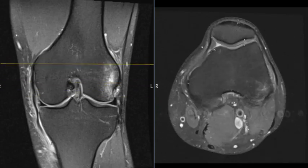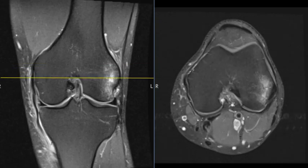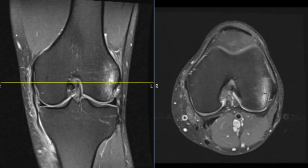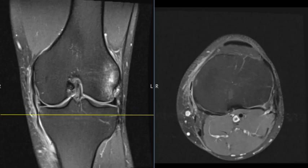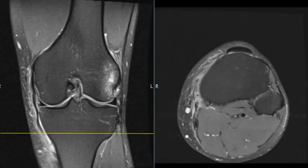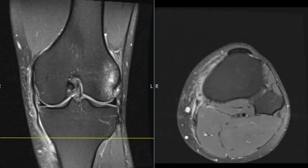On this axial view we can see the kneecap up front looking great; we can see the cartilage over the rim. Here we see that patchy marrow edema over the lateral femur, and over on the inner side is where we have that torn medial collateral ligament.